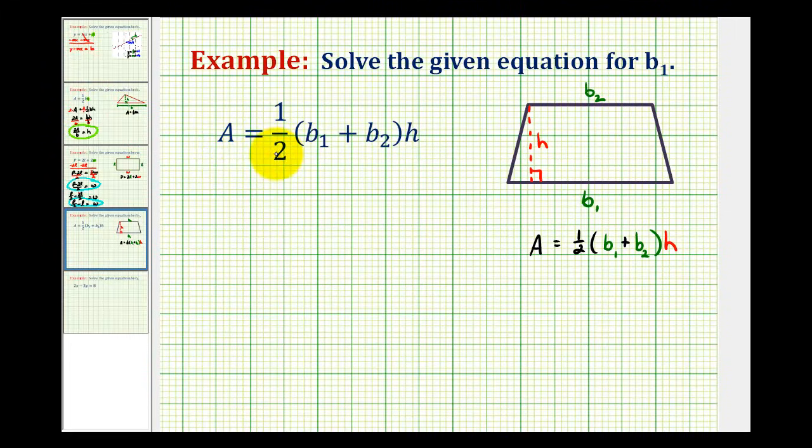Here we're given the equation A equals one-half times the quantity B sub one plus B sub two times H, and we want to solve this equation for B sub one.